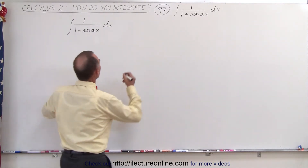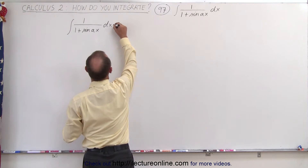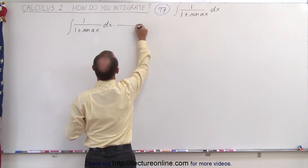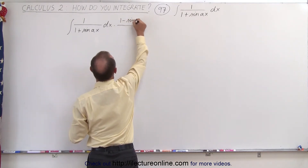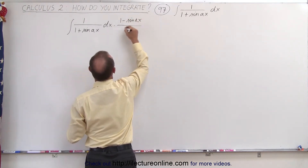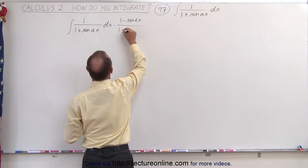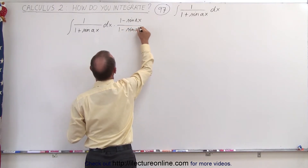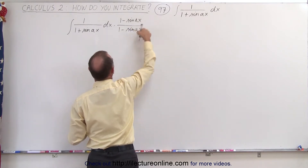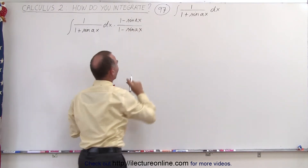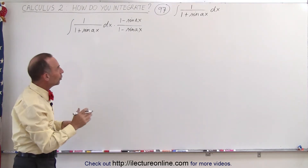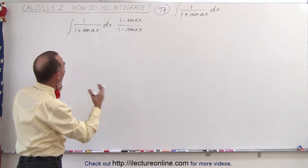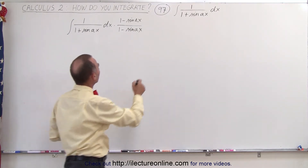In other words, multiply this times 1 minus the sine of Ax divided by 1 minus the sine of Ax. This is equal to 1, so we haven't changed anything, but notice how that changes the integral.